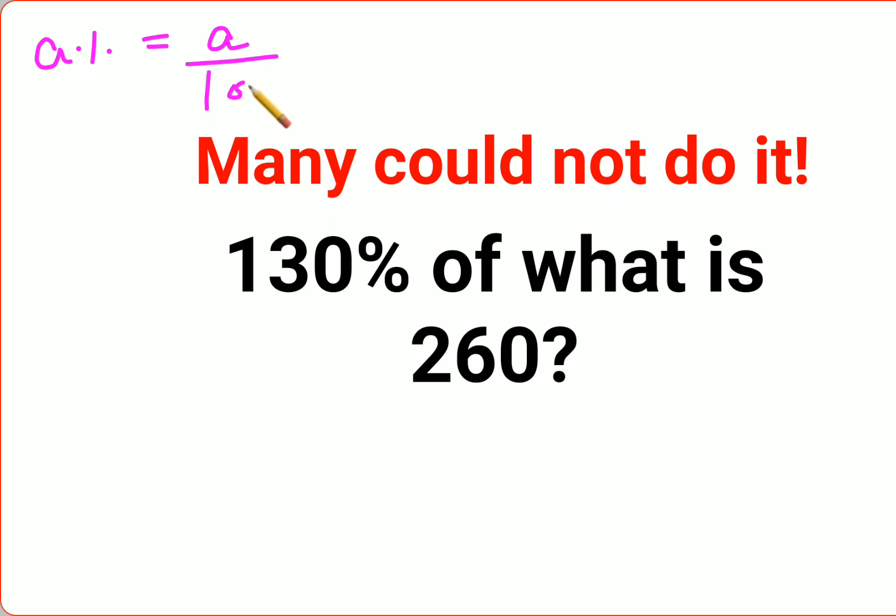So similarly, 130 percent can be written as 130 upon 100 of what—let that number be a—is equal to 260. Okay, so this zero and this zero gets cancelled.